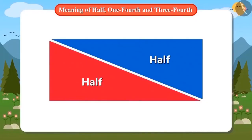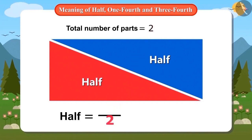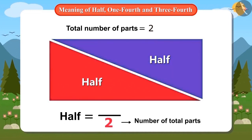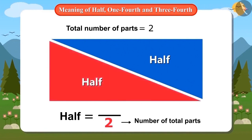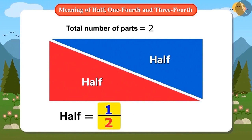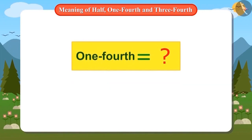But ma'am, how to write it as a number? Very easy. First, we will see how many parts of the whole object there are. There are a total of two parts of this entire rectangle. We will draw a line to show it and write two below it. Now tell me — how many of these two parts will be called half? Madam, one of these two parts will be called half. Absolutely right. So we will put one above this line. It means one out of two parts. But how do we read it? It is read as one half — that is, one out of two parts.